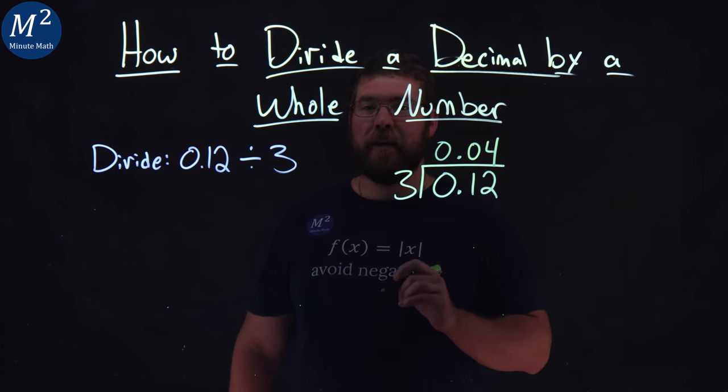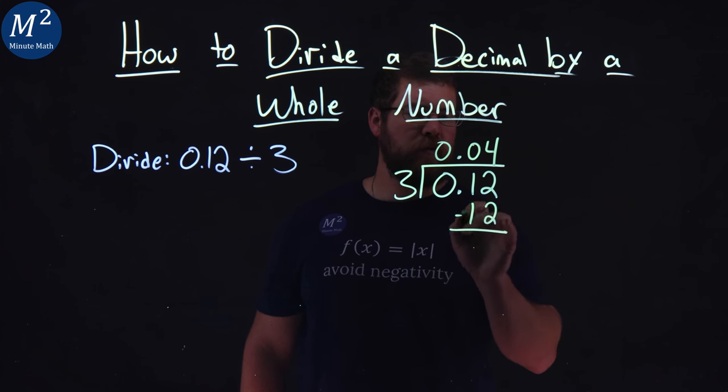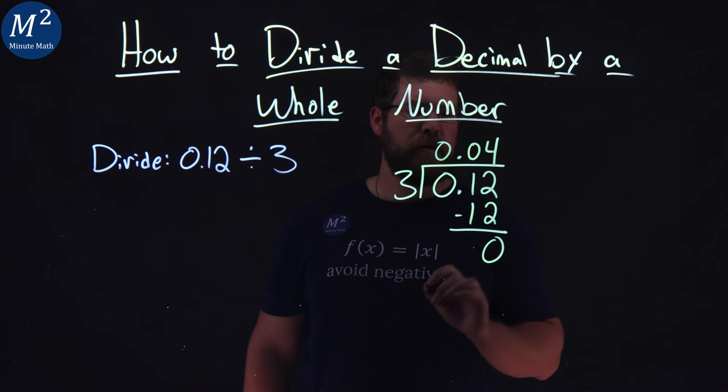4 times 3 is, well, 12. Subtract the two numbers, 12 minus 12, and we get 0.